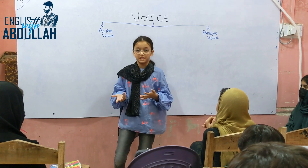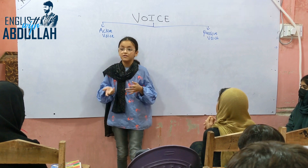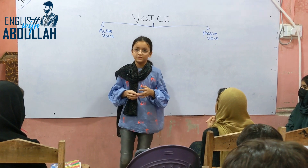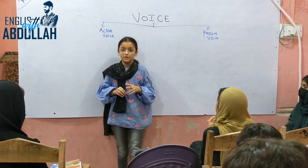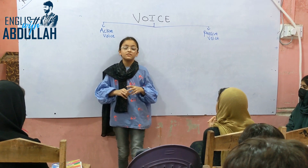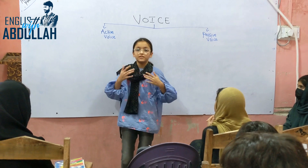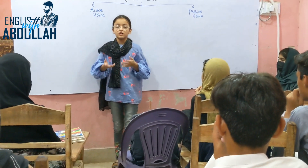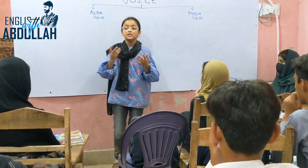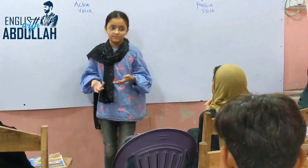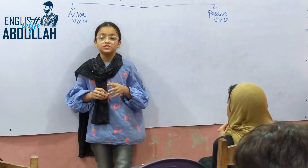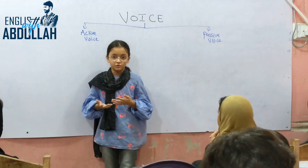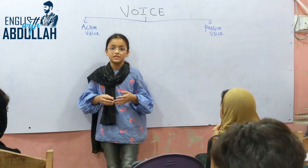To identify a passive sentence, we look for a helping verb plus the third form of the verb. We use 'by' when we want to mention the name of the subject.